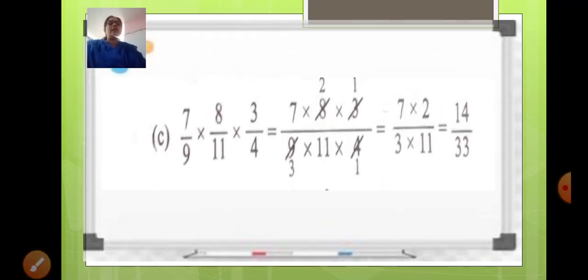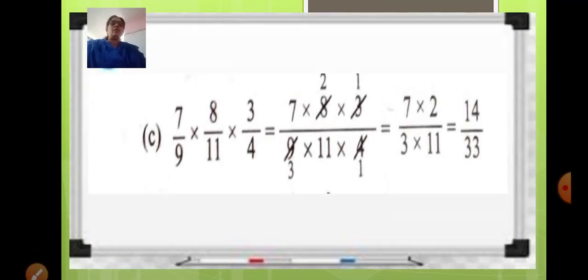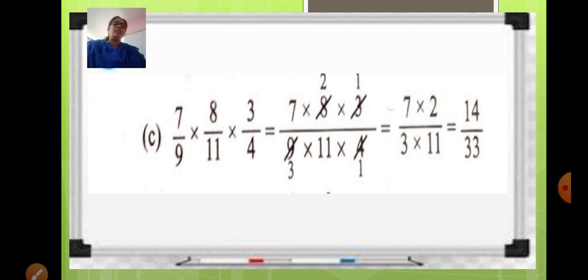Just check your answer — solve it and check your answer with this slide. Multiply all the numerators together, cancel the number which is divisible with each other, and then multiply the numerators together and the denominators together and write the fraction.